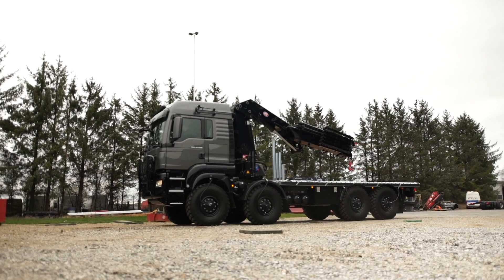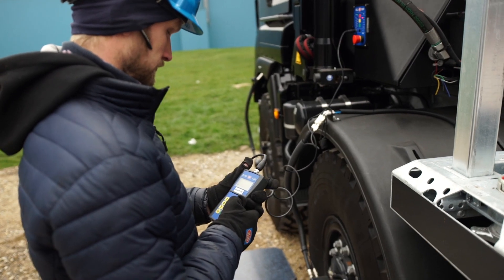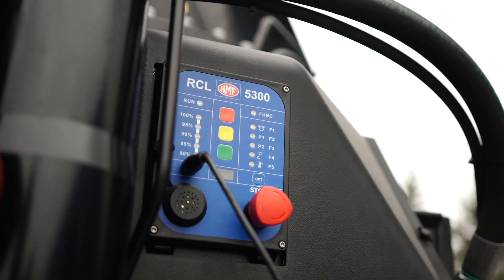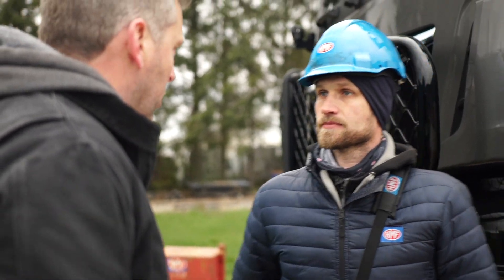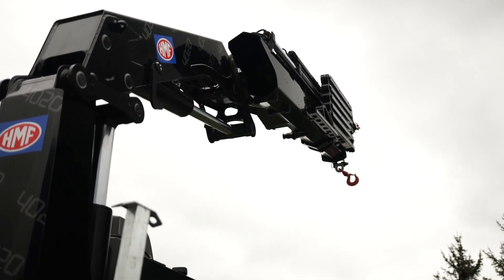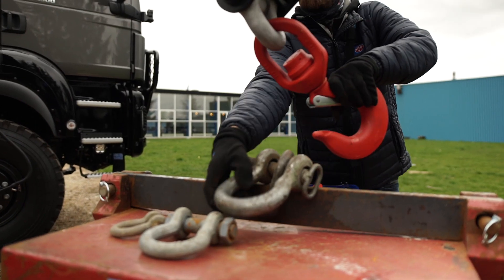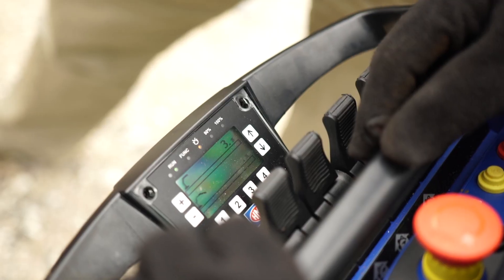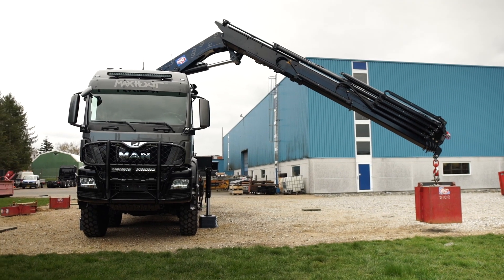The EVS system is an advanced security system from HMF and Rune tells me that you tell the system during the programming how much you allow the vehicle to heel before the system will slow down or even stop a movement.